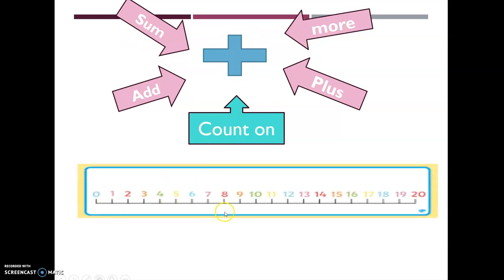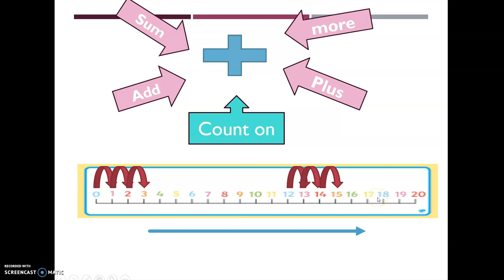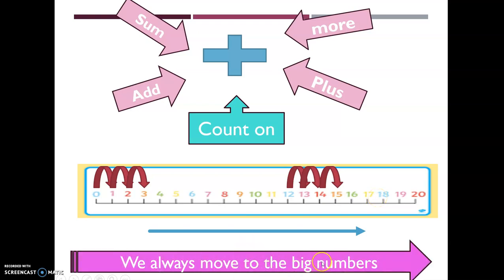Do you remember count on? Do you remember this line that has a lot of numbers? It is the number line. If I want to count on, it means I should move to the bigger number. Look, I'm counting on from zero to one, two, three. What if I want to start from another number? I will start from 12 and count on: 13, 14, 15. Every time you count on, or you add, or you make plus, it means you are moving to the right. And we always move to the big numbers.